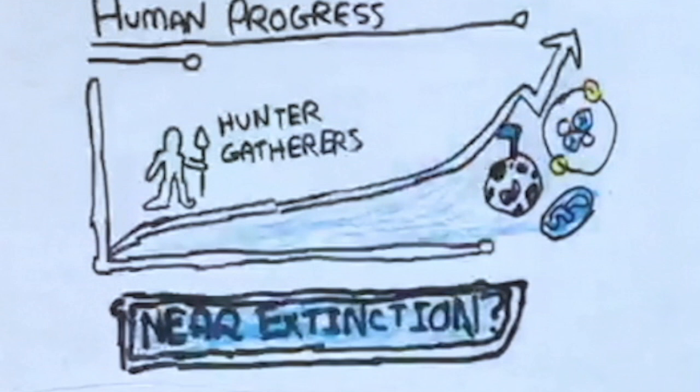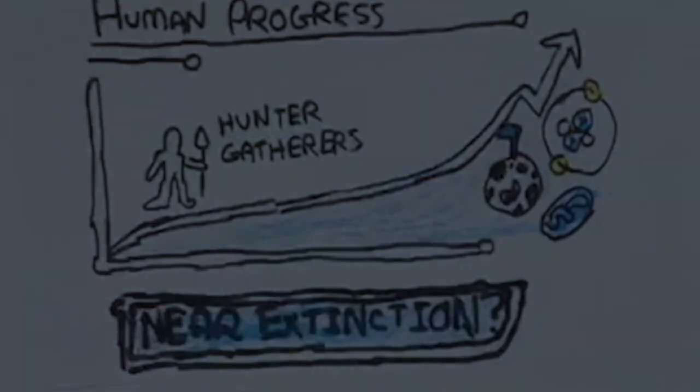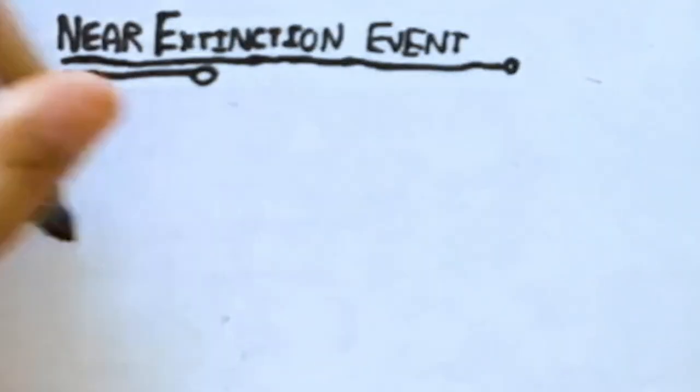In fact, there were some points in history where the majority of the human race was wiped off the face of the planet. One of the most notable of these events occurred approximately 70,000 years ago.